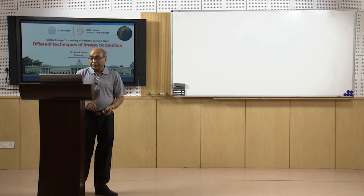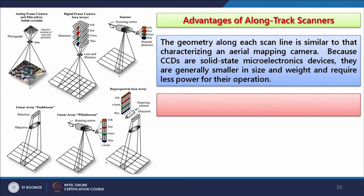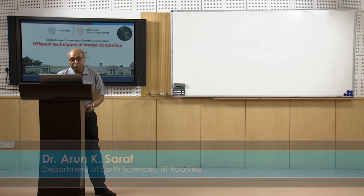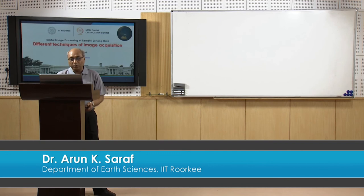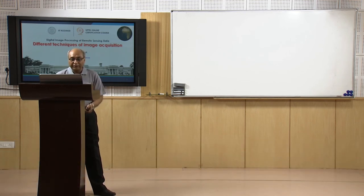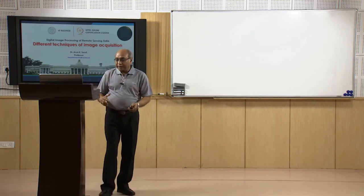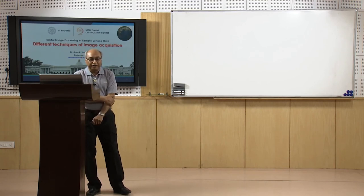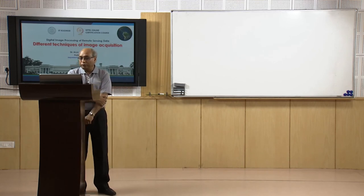Advantages of along-track scanners include geometry along each scan line similar to that of an aerial mapping camera. Because CCDs are solid-state microelectronic devices, they are generally similar in size and weight and require less power. One disadvantage of push broom systems is the need for high-quality calibration of each CCD so they respond identically to the same signal quality. Space is now full of satellites — earlier only a few countries had satellites, but now more than 20 countries have their own satellites of various types in various orbits.